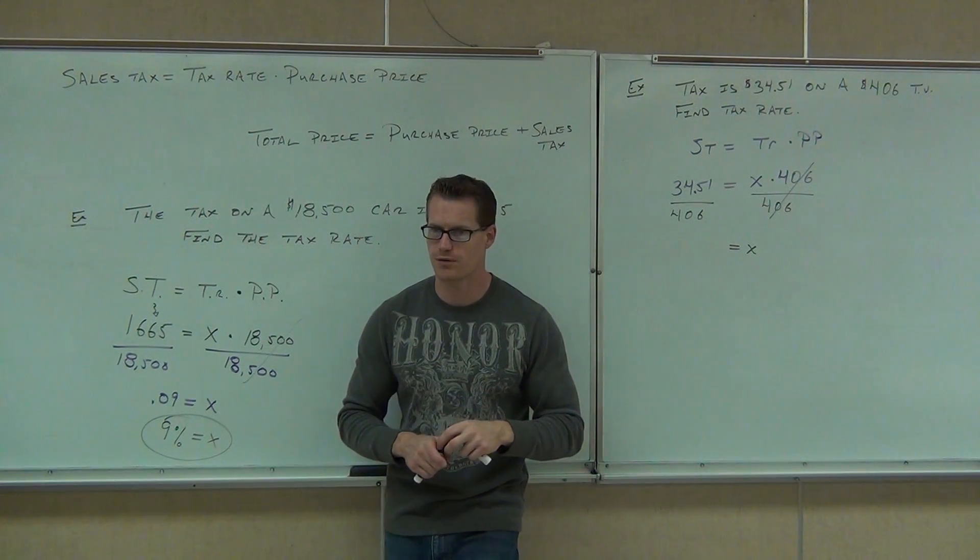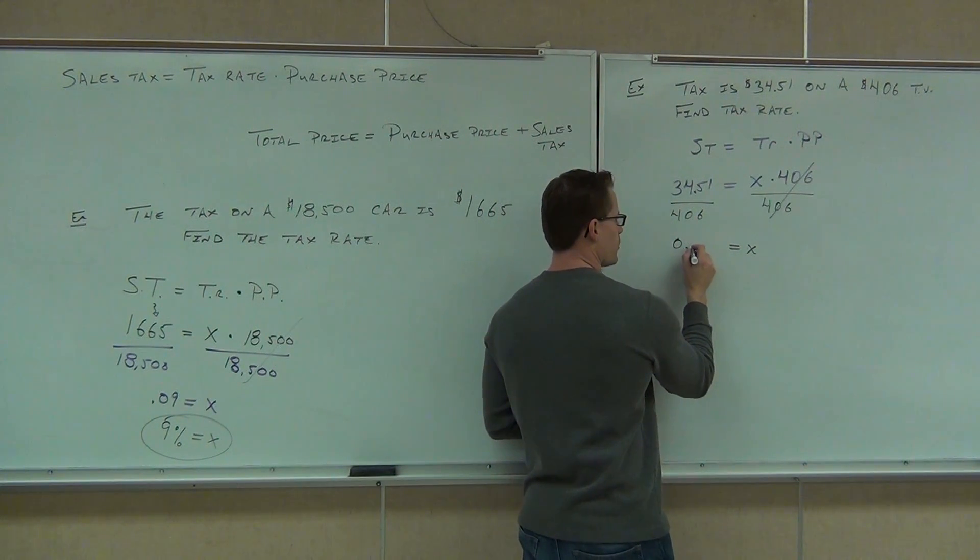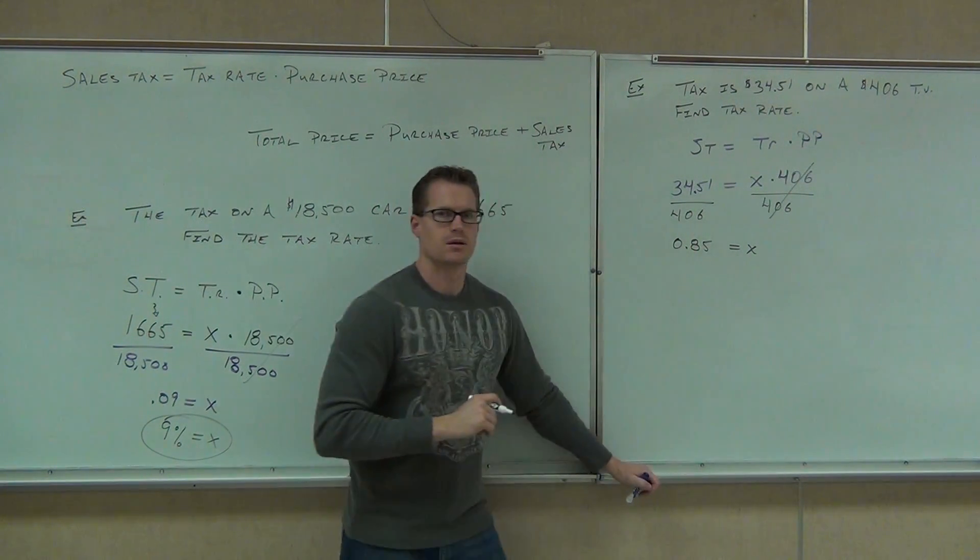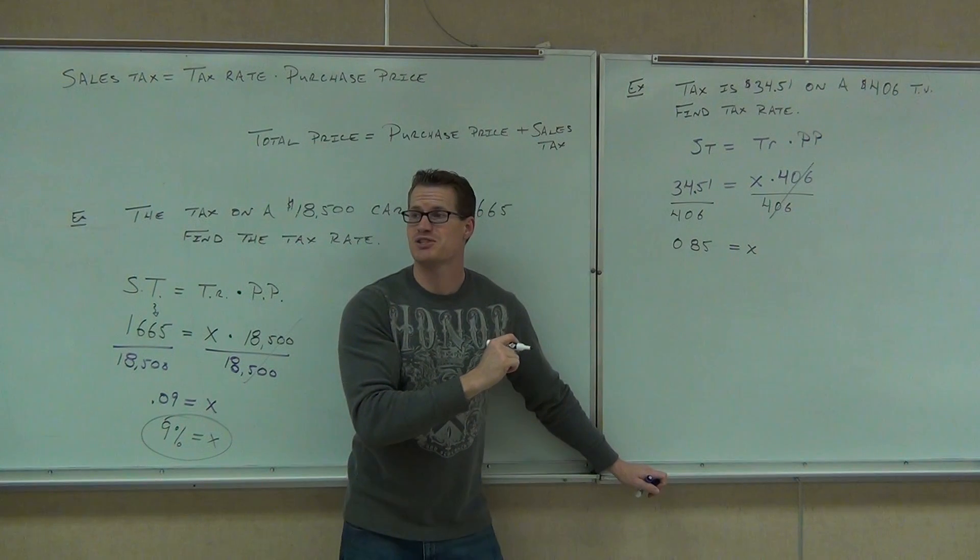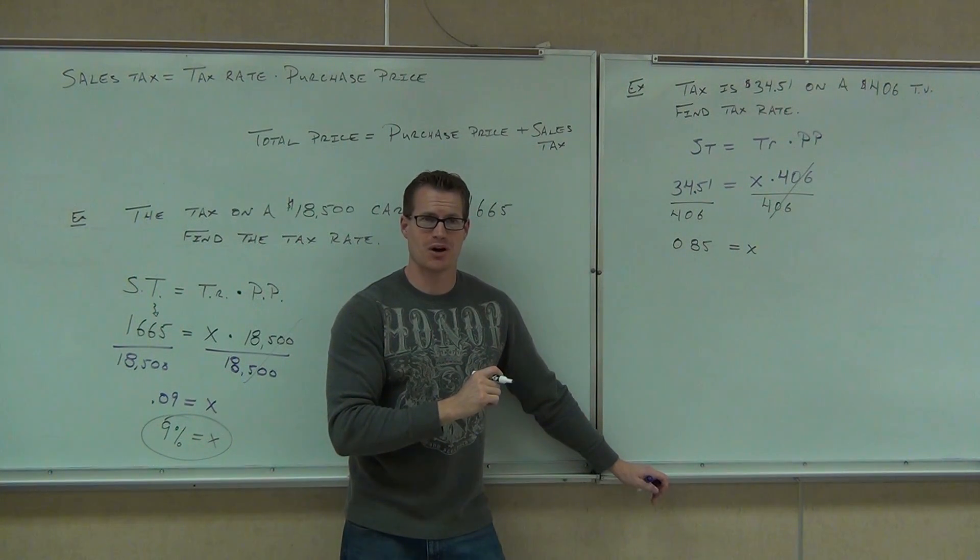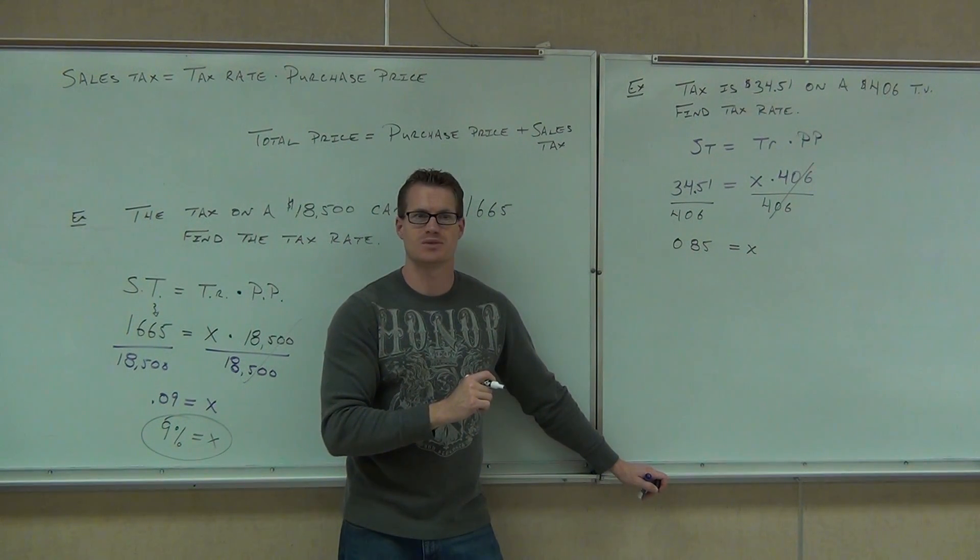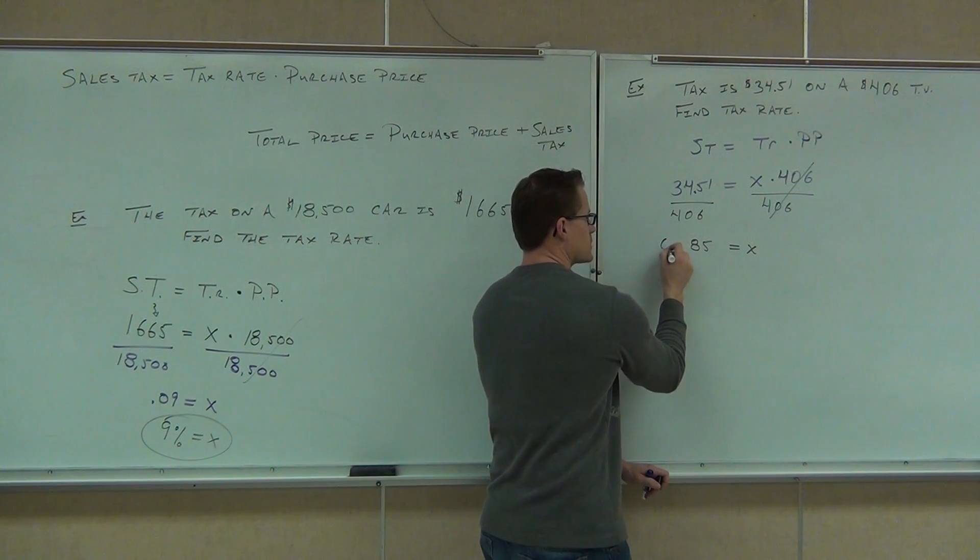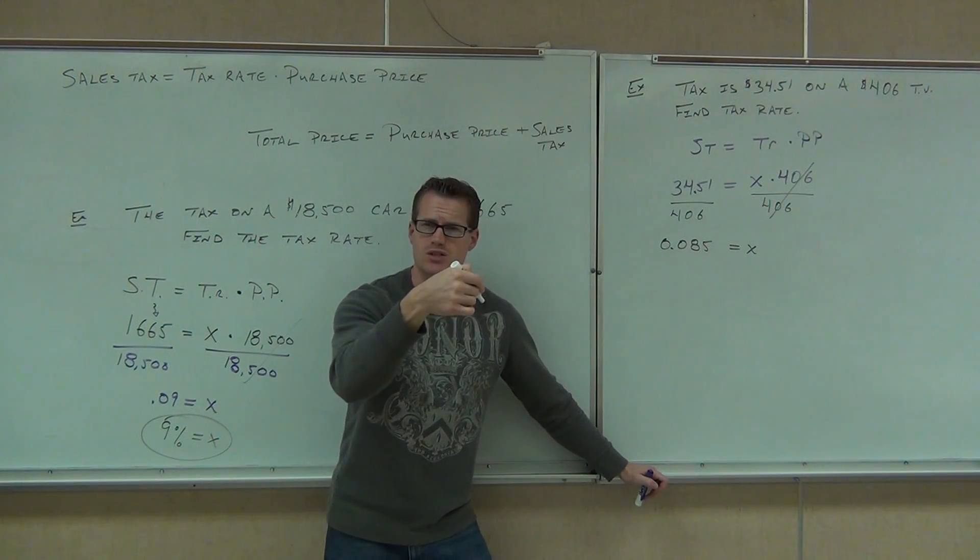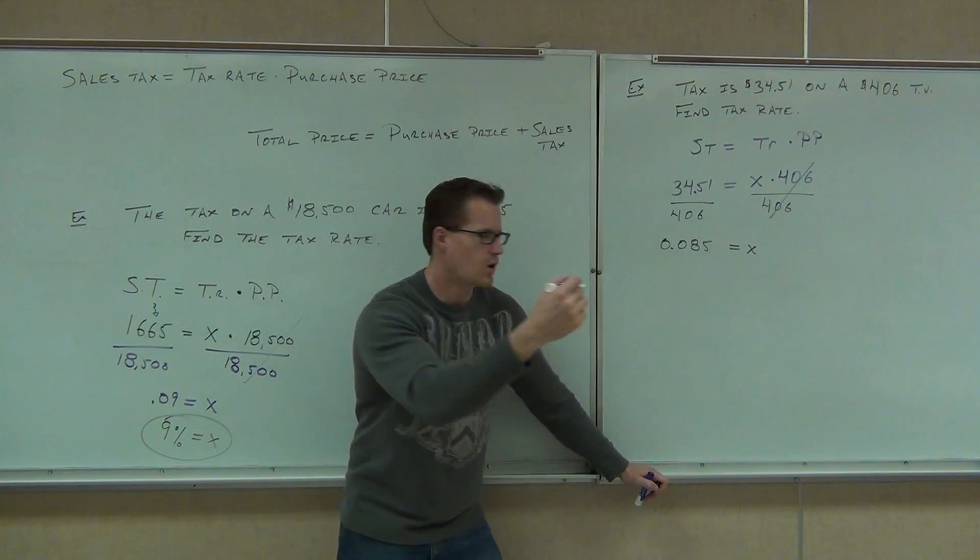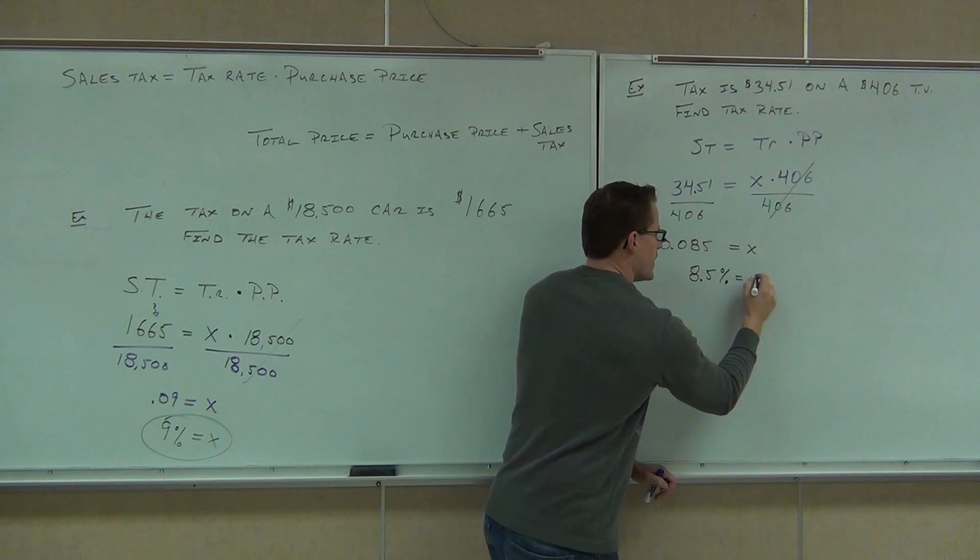0.085. Is there a difference there? Yes. One would be 85% tax. That means you buy something worth $100 and they charge you $85 just to buy it. Do you want to pay that? No. Me neither. That's ridiculous. So we better make sure we have that correct. 0.085. That's way different. Translate that to a percent. You move that decimal place. What is it, left or right? Right. How many spots? Always two. 8.5%. Make sure you have the percent sign. That is your tax rate.